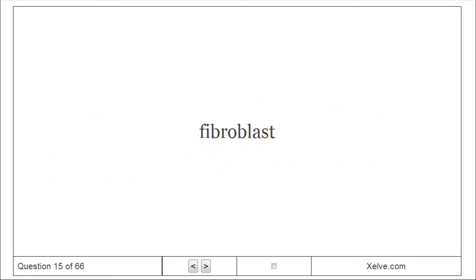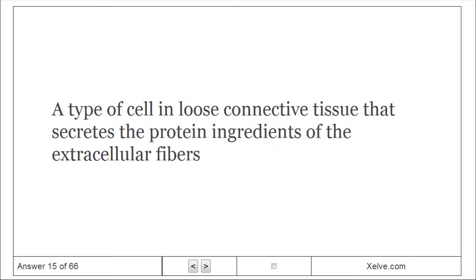Fibroblast: A type of cell in loose connective tissue that secretes the protein ingredients of the extracellular matrix.